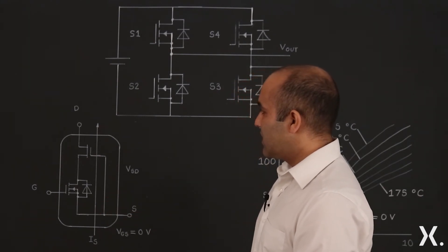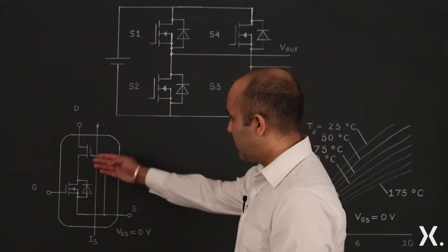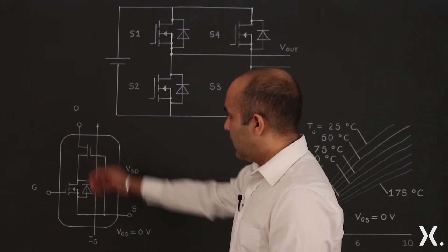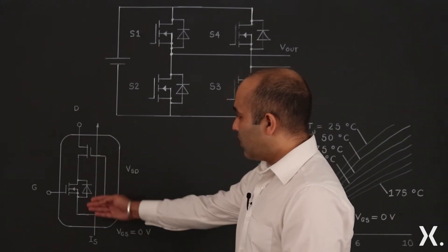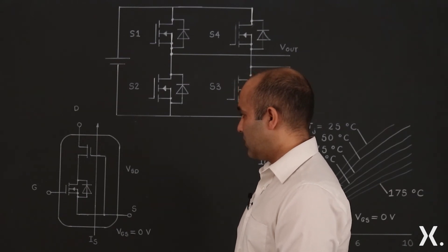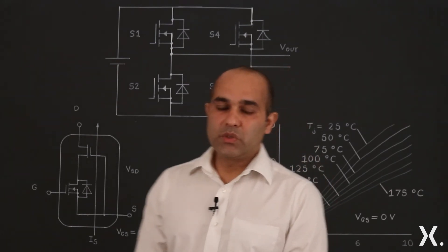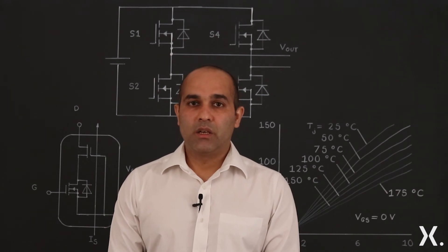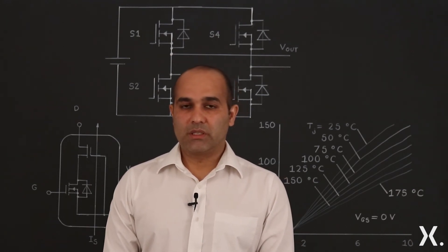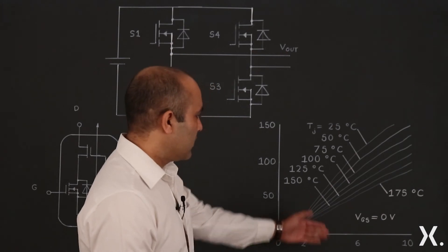As we can see here, there is a normally-on high-voltage 650 volt GaN FET in series with a normally-off low-voltage silicon MOSFET. One of the benefits of using an Infineon GaN FET is that it has a positive temperature coefficient of resistance in the third quadrant, and this is shown in figure 3.